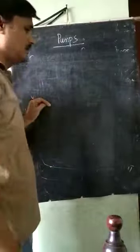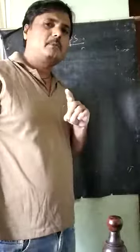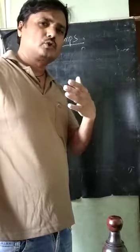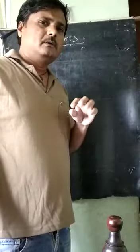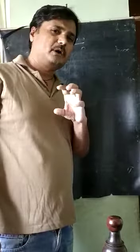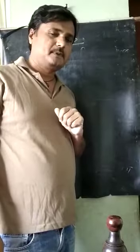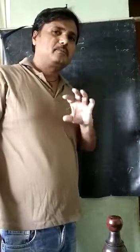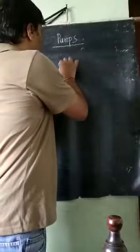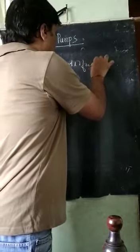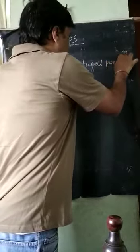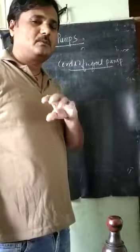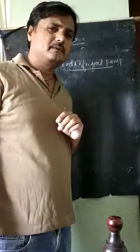The centrifugal pump is somewhat similar to a turbine, but turbines are power generating machines - electrical energy is the output through a generator. In the case of pumps, these are power absorbing machines - electrical energy is the input. But the action which takes place inside a centrifugal pump is similar to a turbine.